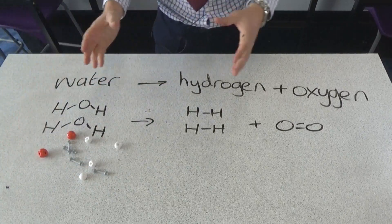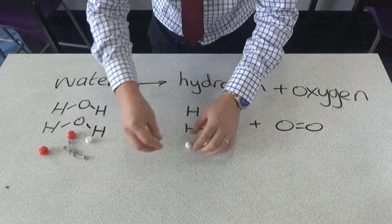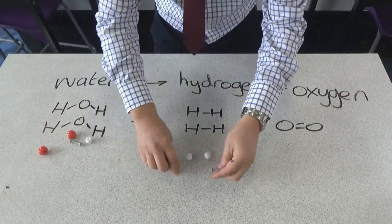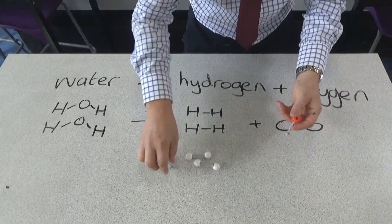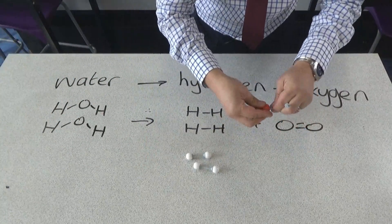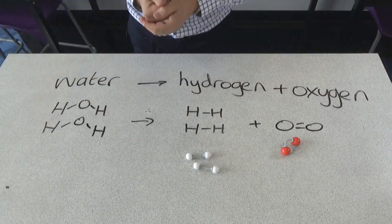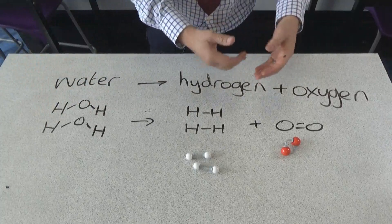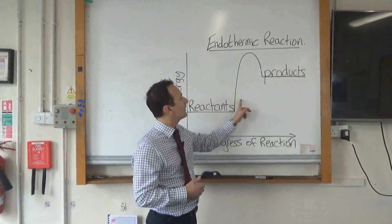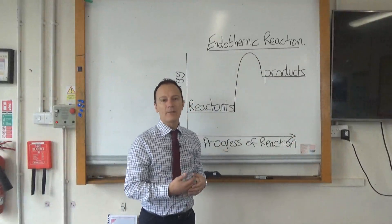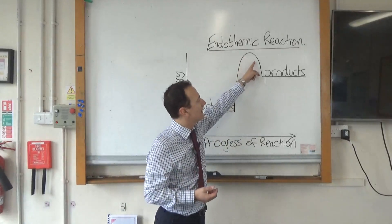Then those atoms rearrange to make the products. We've got two molecules of hydrogen, and as these new bonds form, energy is released. We also get the double bond between the atoms of the oxygen molecule, and all the time this is releasing energy. So once again, it's this balance between putting energy in to break the bonds and then releasing energy as the new bonds form. The reaction profile has this loop shape — energy level increases as we put energy in to break the bonds, then drops again when the new bonds form.